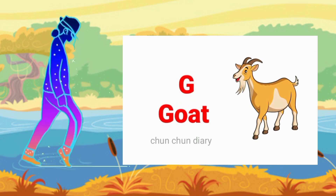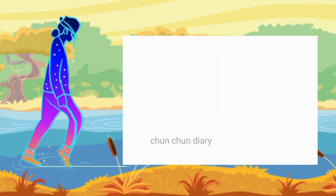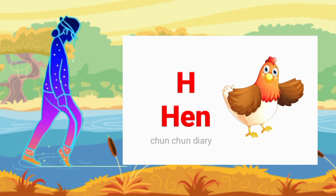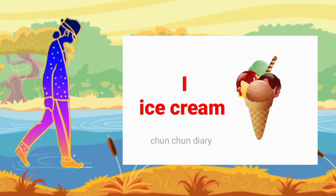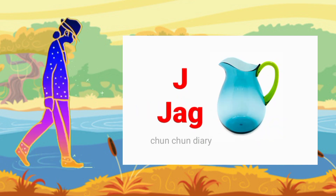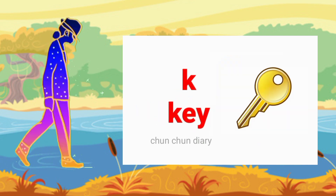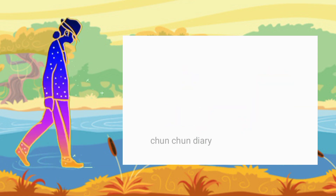G for goat, H for hen, I for ice cream, J for jug, K for key.